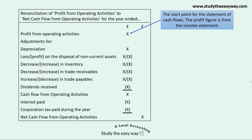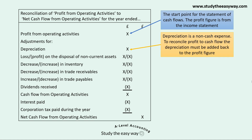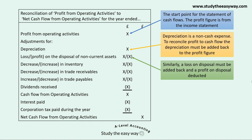Then we include the adjustments. The first one is depreciation, which is a non-cash expense. So to reconcile profit to cash flow, the depreciation charge for the year must be added back to the profit figure — this is the figure shown in the income statement. Similarly, a loss on disposal must be added back, and a profit on disposal is deducted. The loss on disposal is added, and the profit, where shown in brackets, is deducted. This format is similar for the items below.